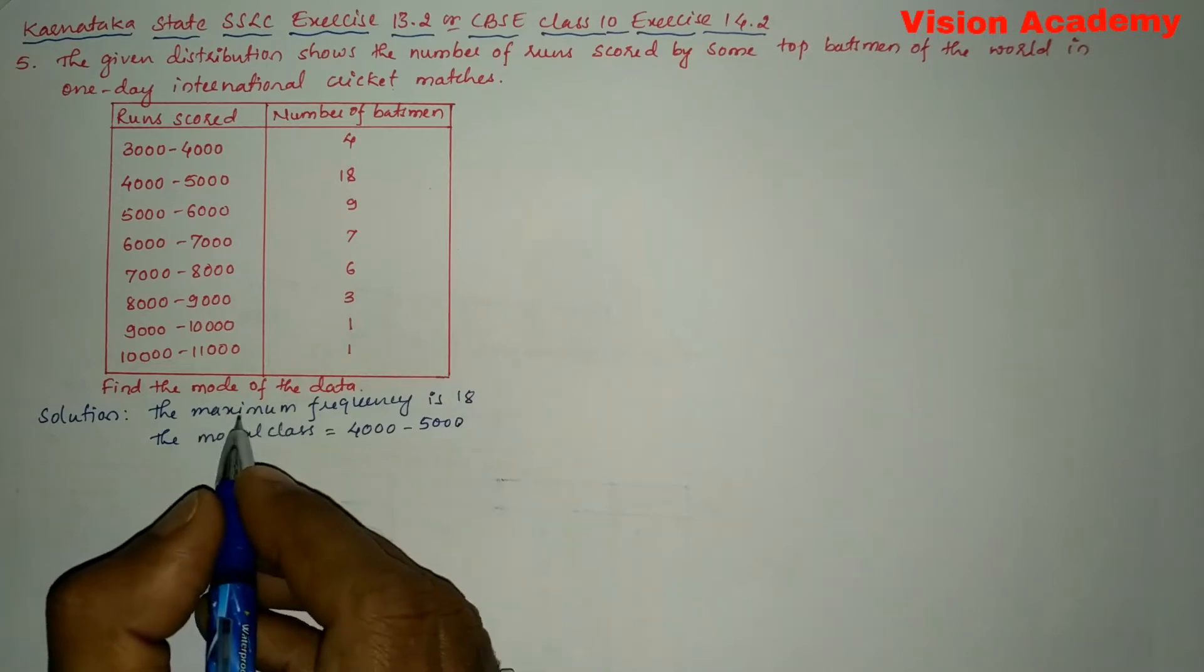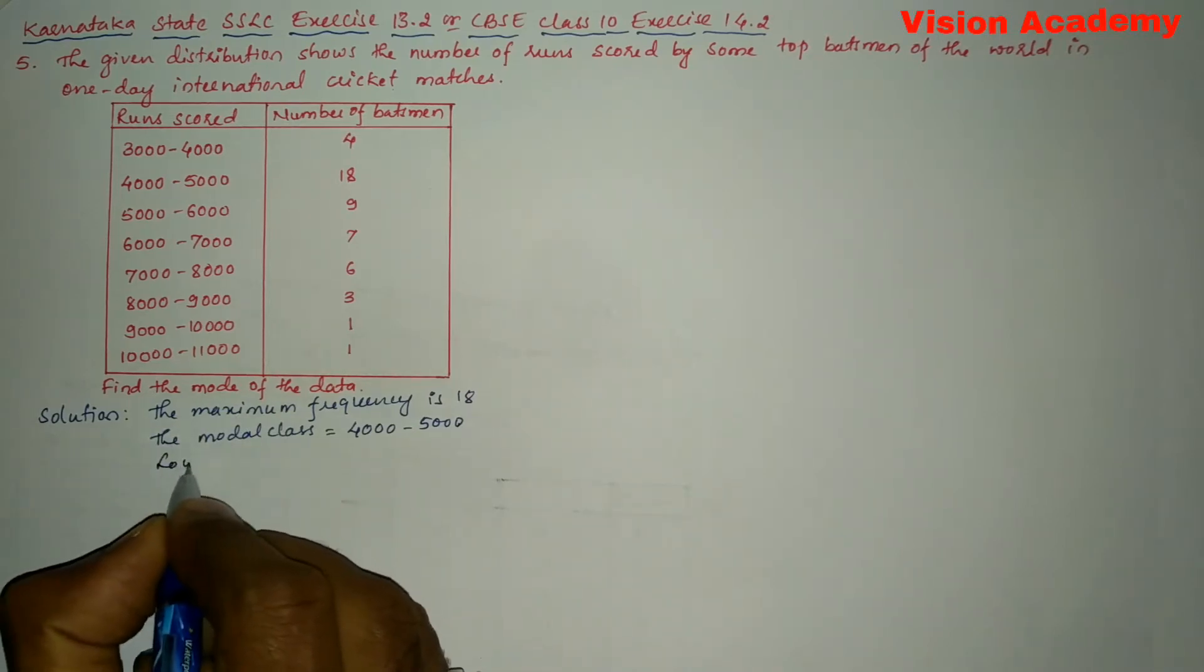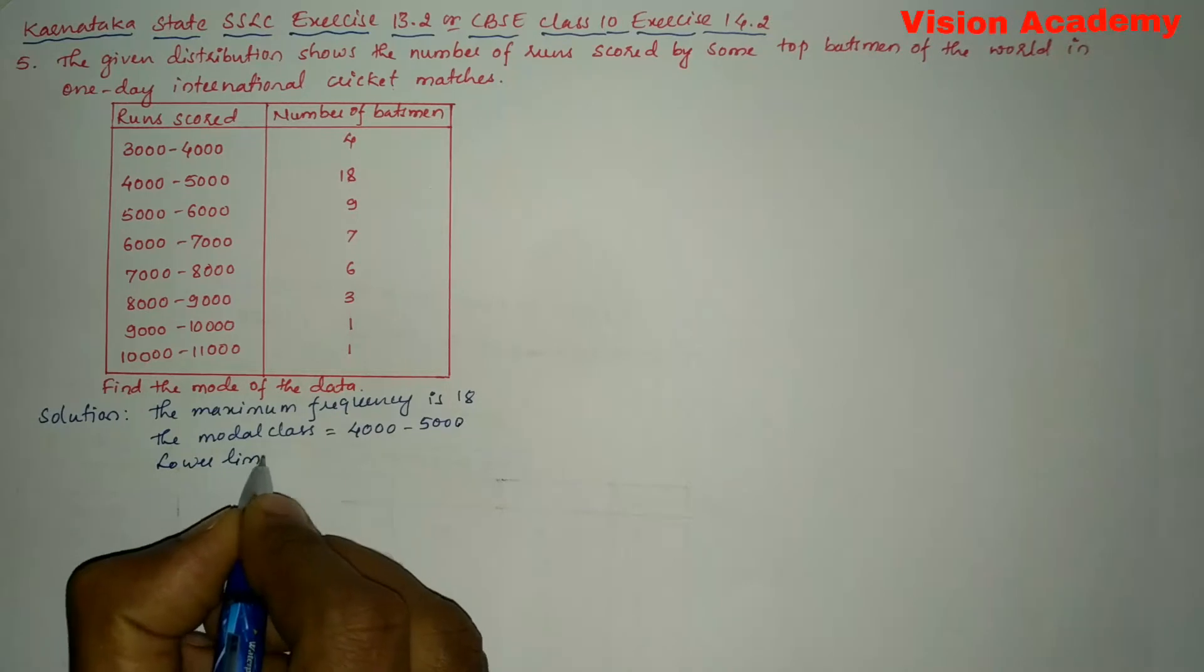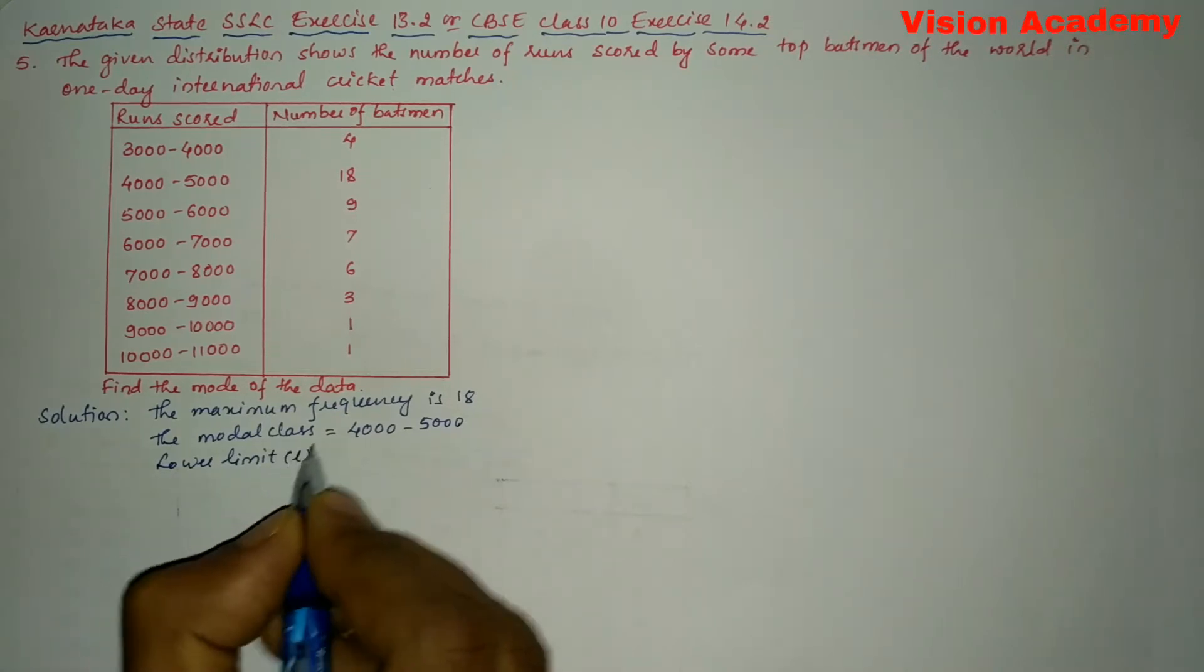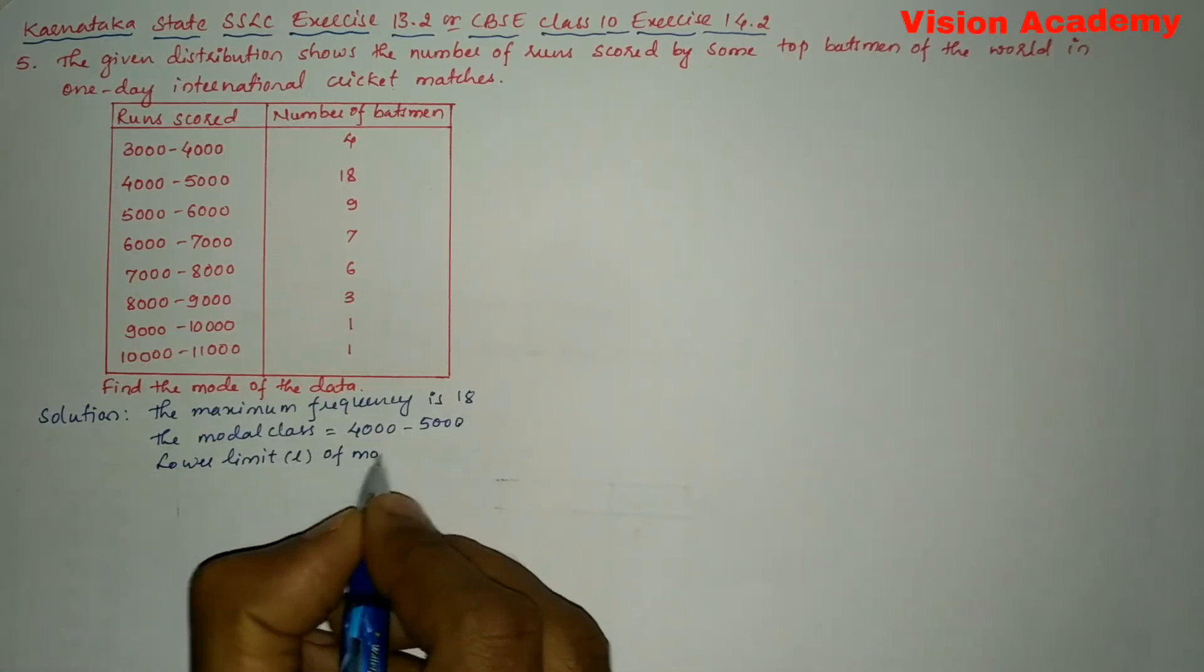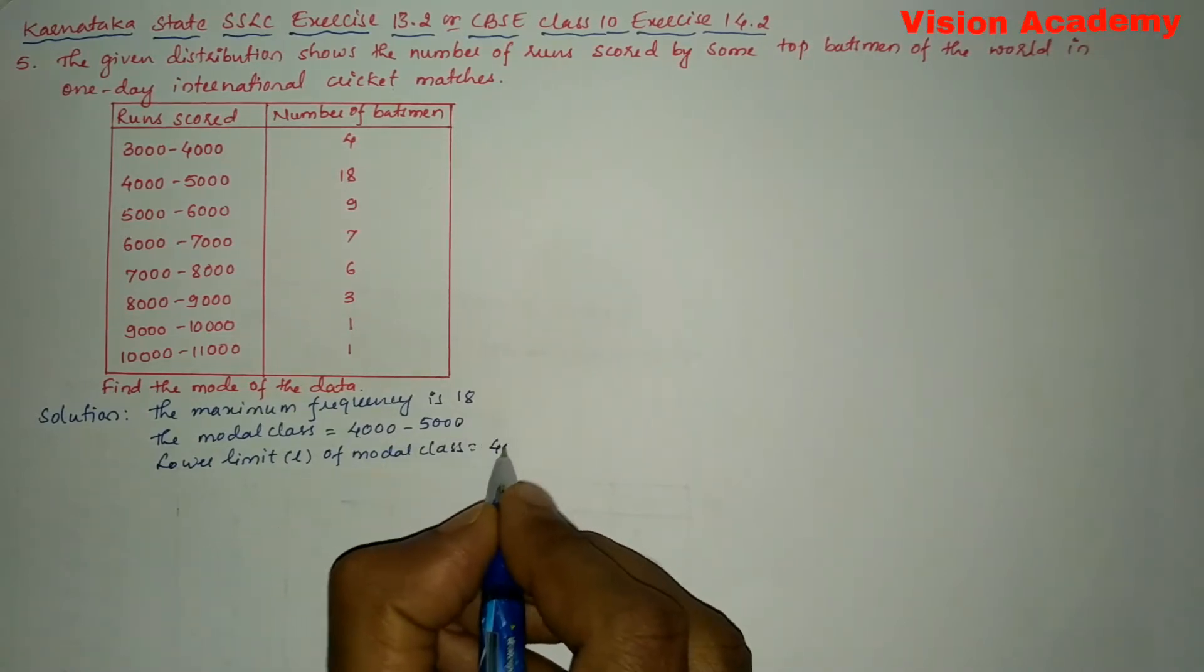Next we will write lower limit, which is denoted as L of modal class. Here you can see the lower limit is 4000.